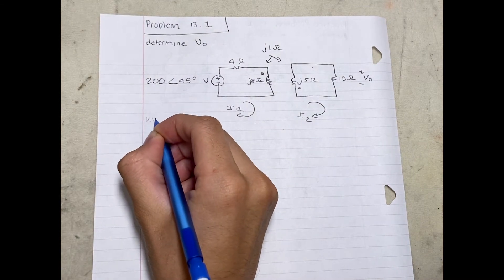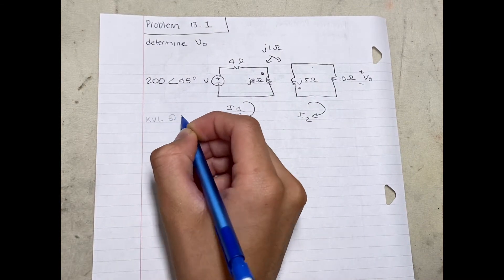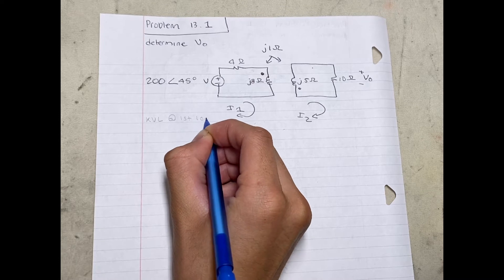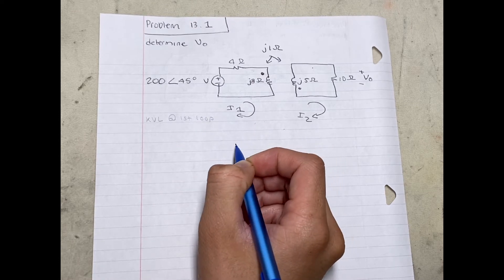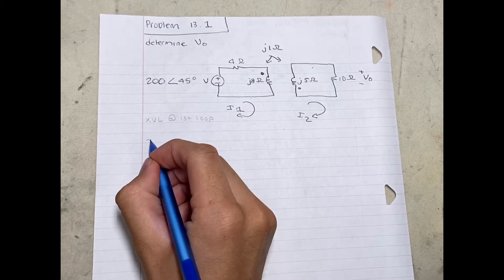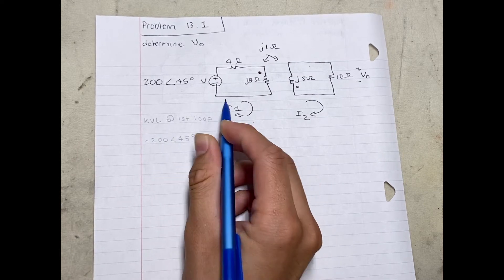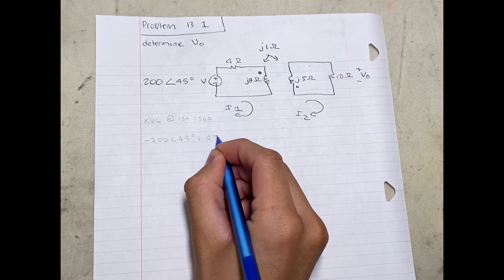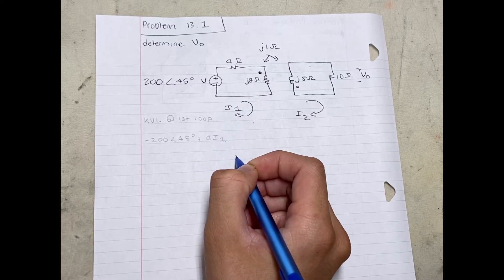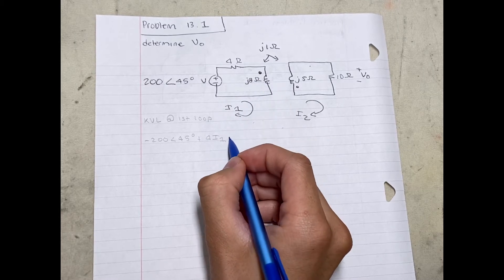So first I'm going to perform a KVL on the first loop. As you can see we have 245 degrees or 200 angle 45, and we're leaving that, so negative 200 angle 45, plus 4I1, plus J8I1.